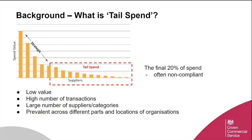Firstly, addressing the basics — what is tailspend? Usually around 80% of an organisation's spend, depicted by the first few columns on the left of the graph, is placed with only 20% of their suppliers. That 20% of suppliers tend to be strategically managed as they're very high-value individual contracts. Conversely, the bottom 20% of spend is generally placed with the other 80% of suppliers, depicted within a dotted red box on the graph. These tend not to be strategically managed as they're very low-value purchases placed individually across a vast number of suppliers. This bottom circa 20% of spend containing that circa 80% of suppliers is what we term as tailspend.